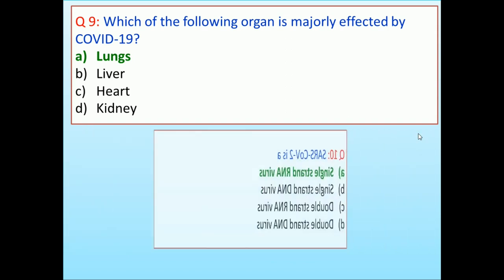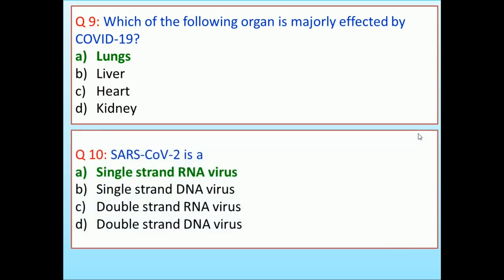SARS-CoV-2 is a: single-stranded RNA virus, single-stranded DNA virus, double-stranded RNA virus, double-stranded DNA virus. Answer is single-stranded RNA virus.